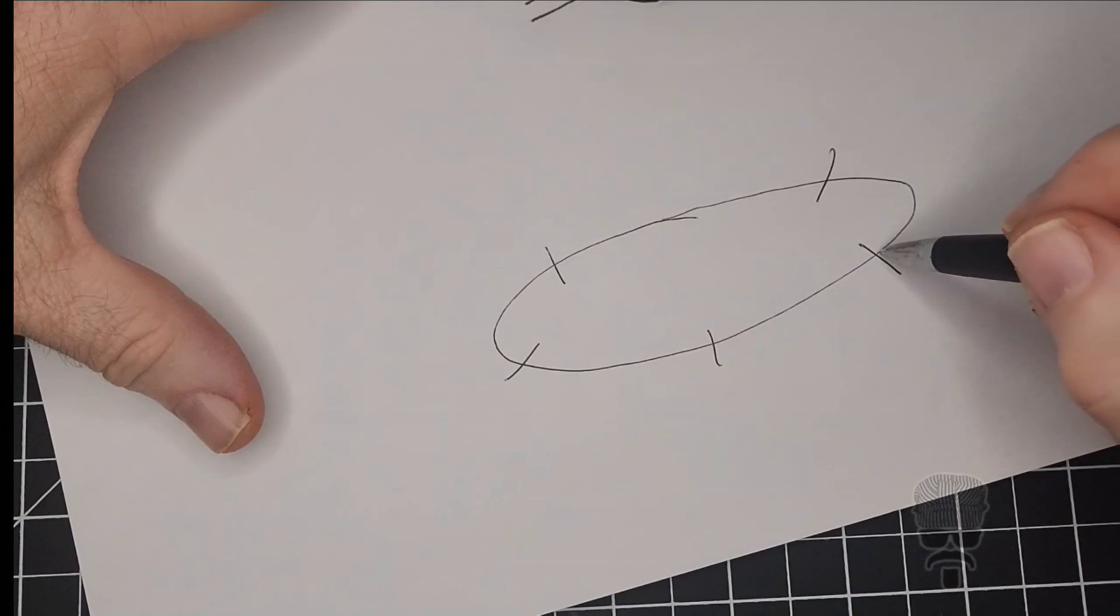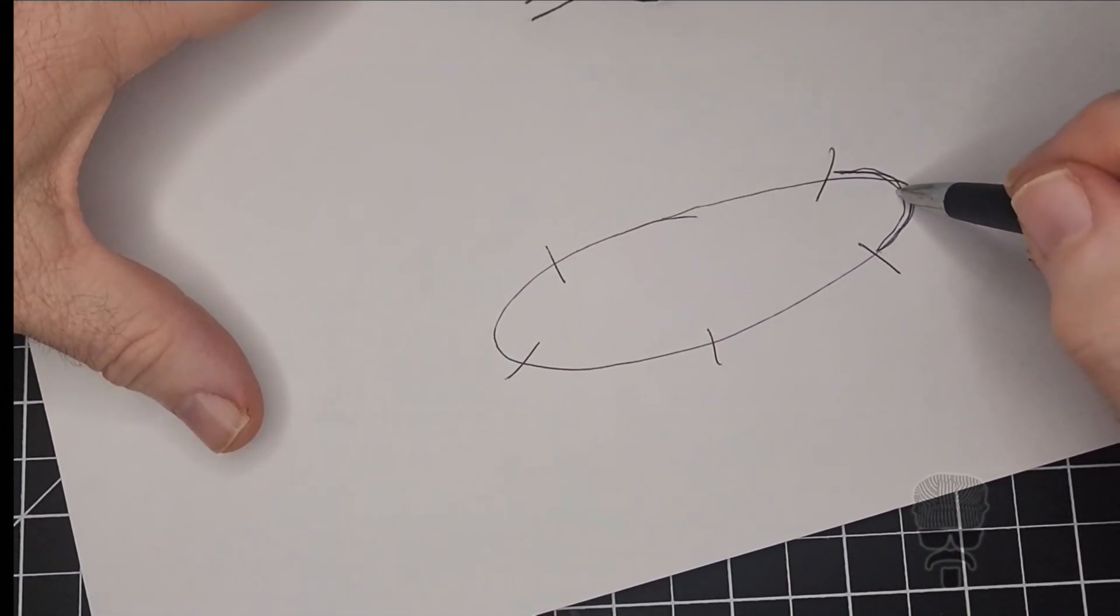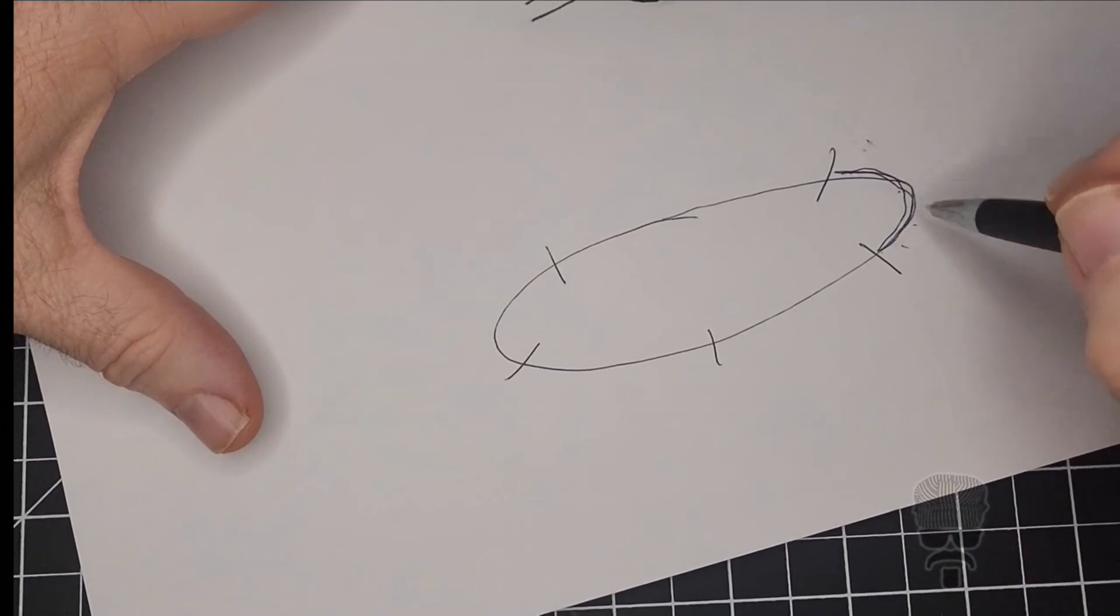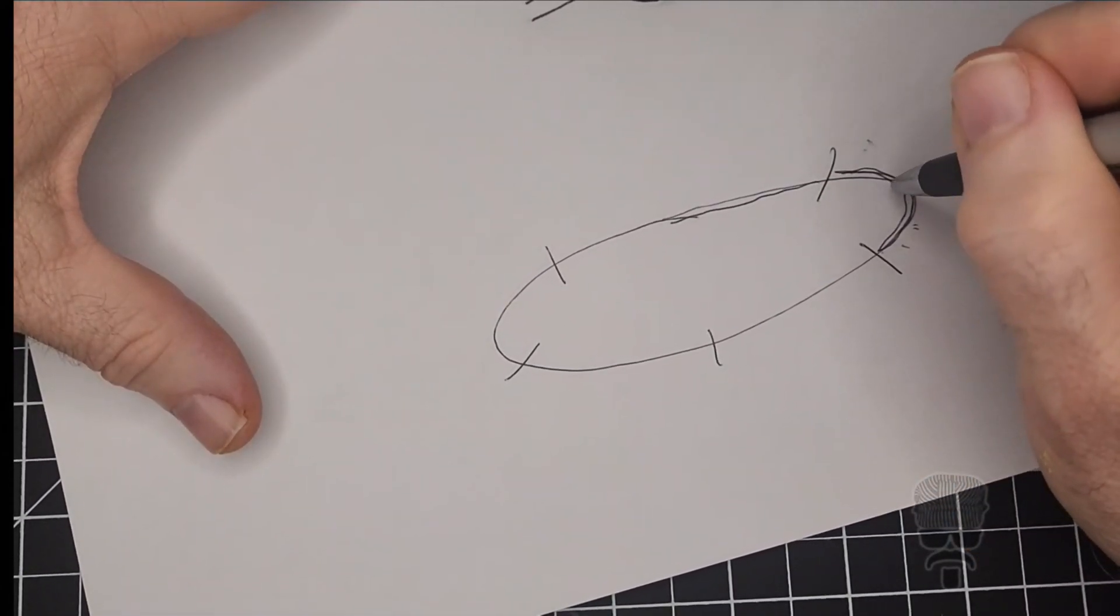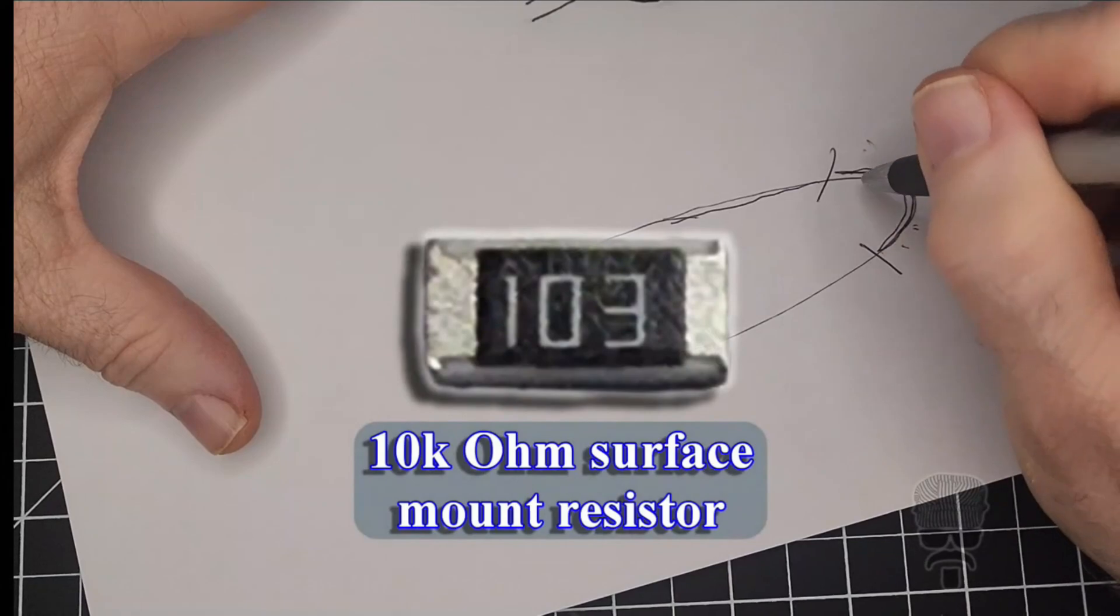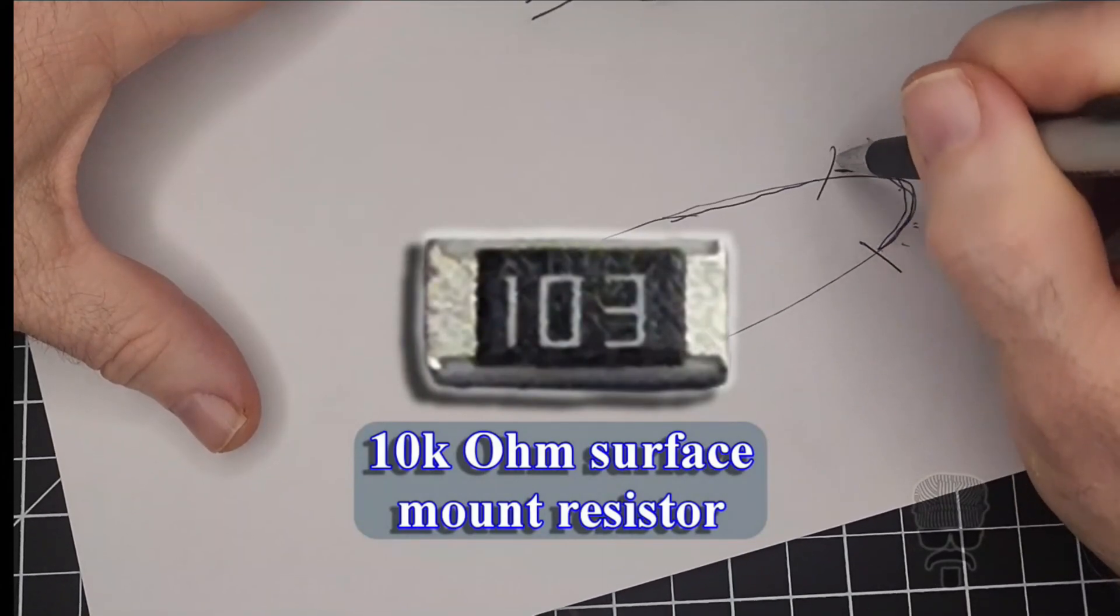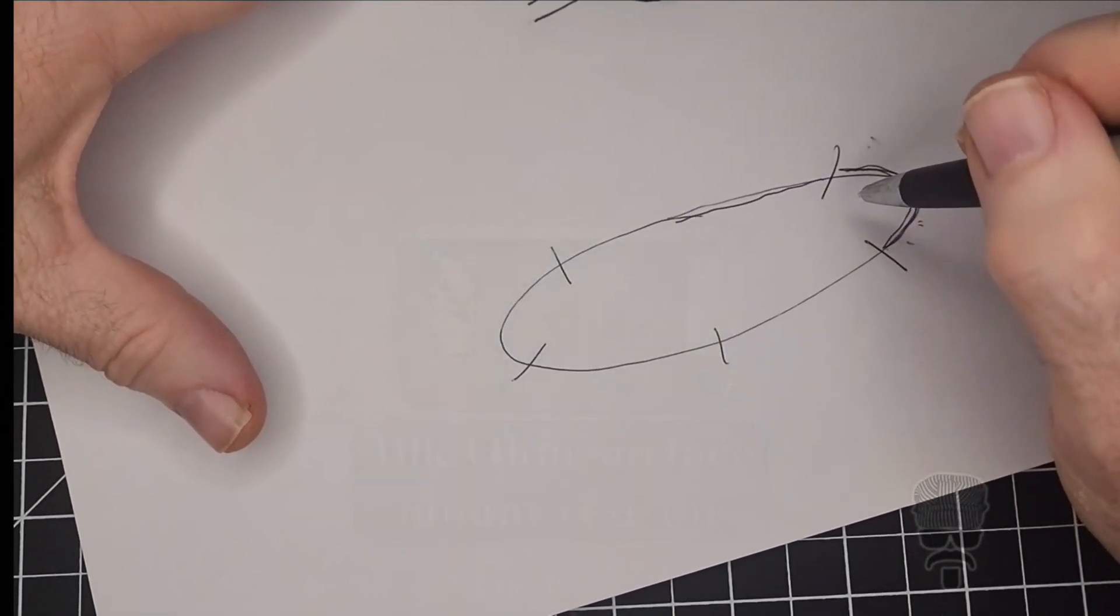One way is to add a resistor to one axle of each car and connect that resistor so track power flows through from one wheel to the other. For my cars I'm using 10k ohm surface mount resistors. These are easily detectable by most block detection systems.